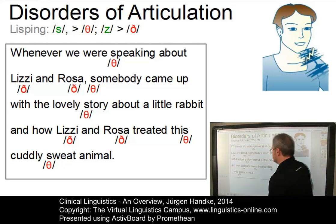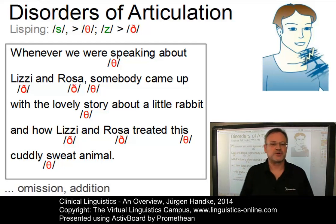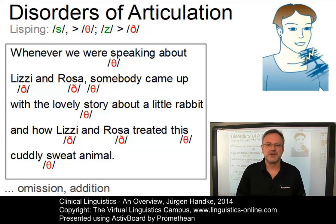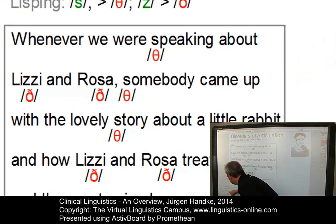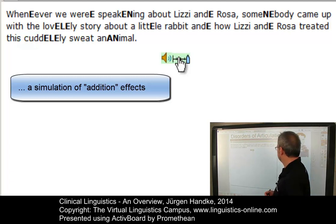Other examples are omission and addition. Omission is where particular sounds are omitted from a word, and addition is where sounds or sound clusters are inserted into a word. An example of addition can be heard as: 'whenever we were speaking about Lizzie and Roza, somebody came up with a lovely story about a little rabbit and how Lizzie and Roza treated this cuddly sweet animal.'